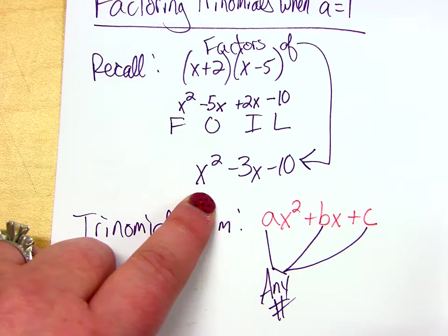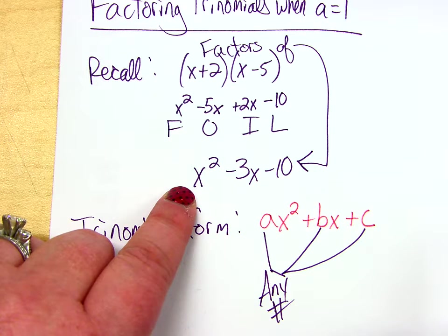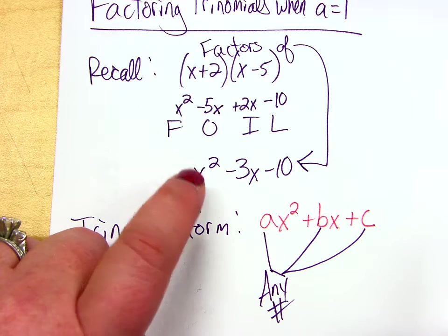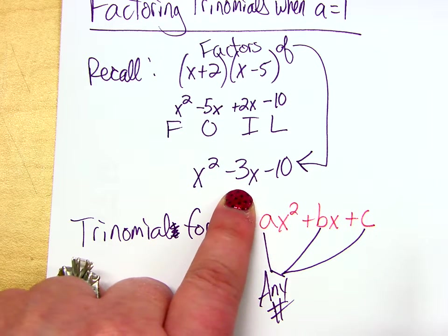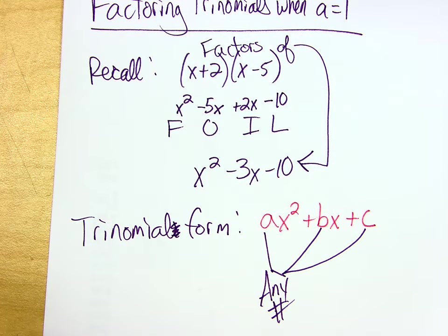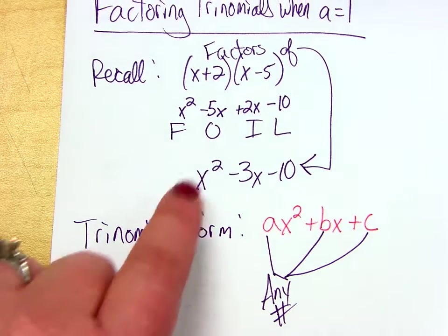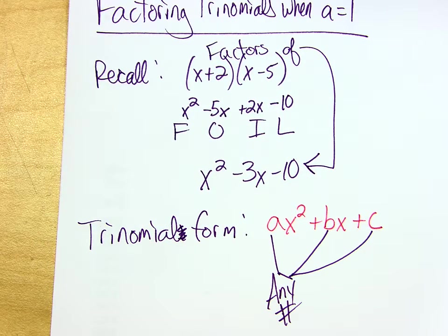So in this example right here, what's the value of A? One. If there's nothing written there, it's a one, right? So A would be one. What would B be? Negative three. And C is negative ten. Get the idea? So it's just A, B, C.